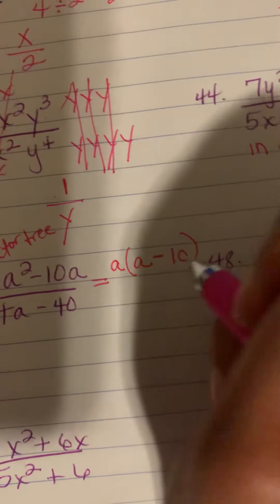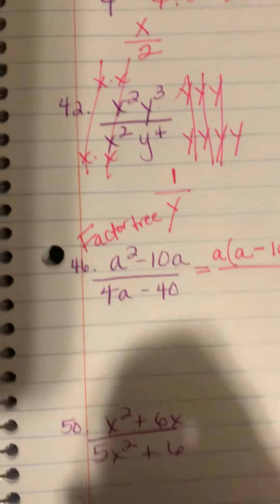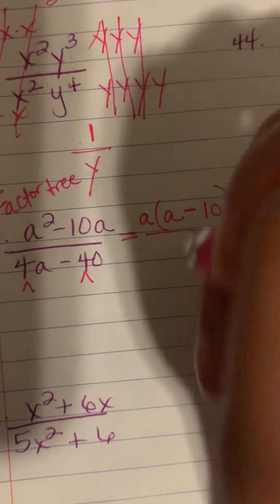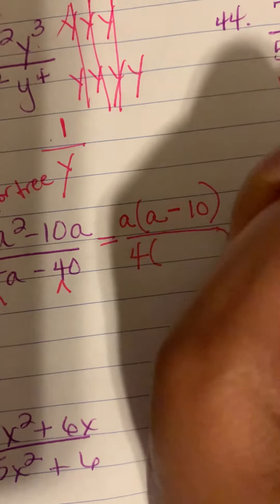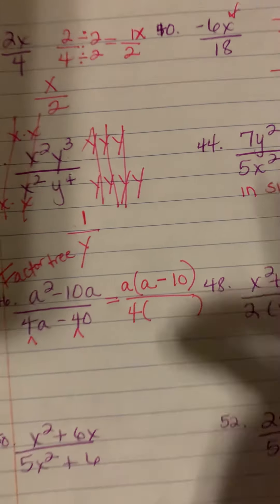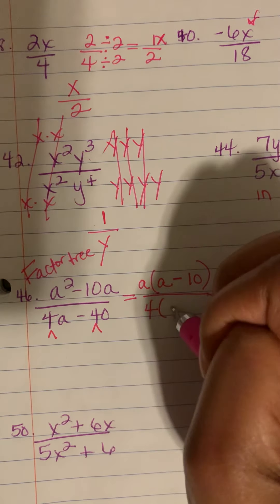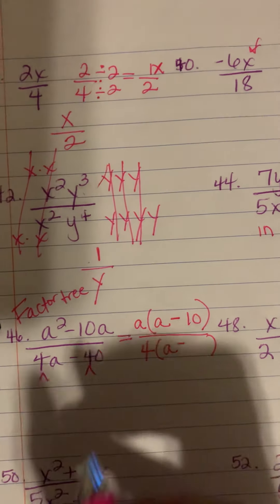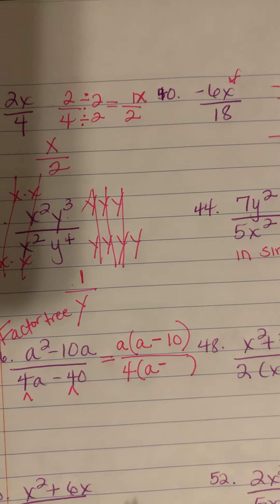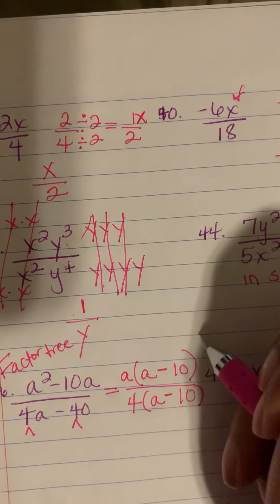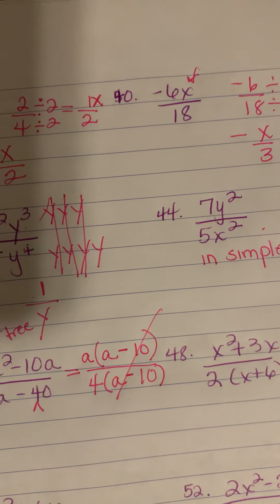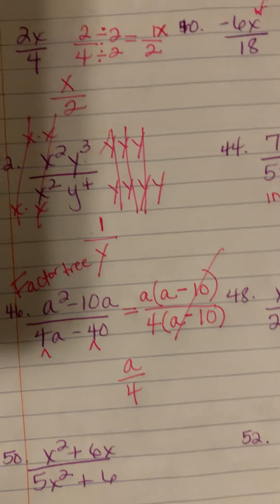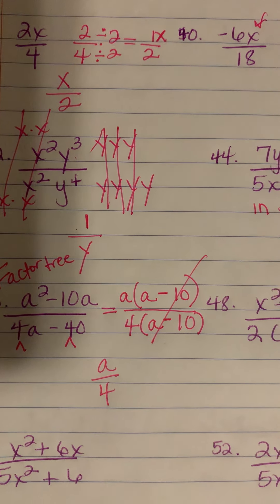For the denominator, think factor tree — the number they have in common is four. Open one set of parentheses: I need 4a, and four times 10 gives 40. This expression is the exact same as the numerator, so they cancel out. What you have left is a over four. It's like rationalizing — you're factoring and canceling things out.